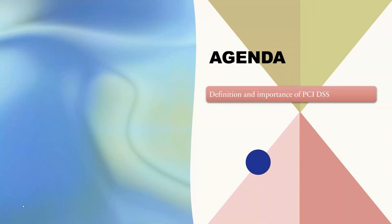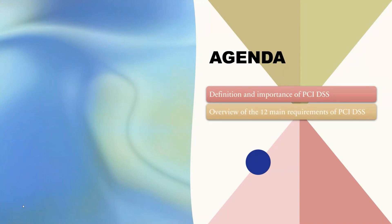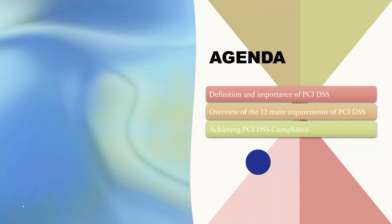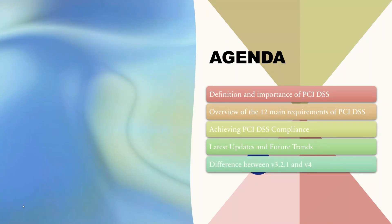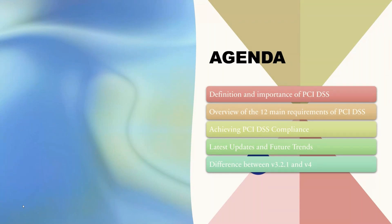We will look at what is PCI DSS compliance — its definition and importance. An overview of the 12 main requirements; there are 300-plus sub-requirements organized into 12 categories, and we will see them at the goal level. We'll cover achieving PCI DSS compliance — how to break the big rock into small chunks — and future trends like how AI can help by automating processes. We'll also cover differences between version 3.2.1 and version 4.0.